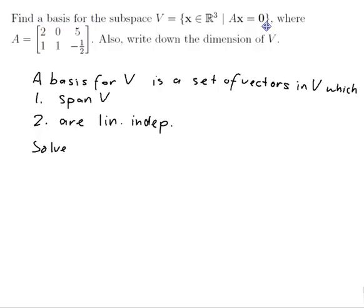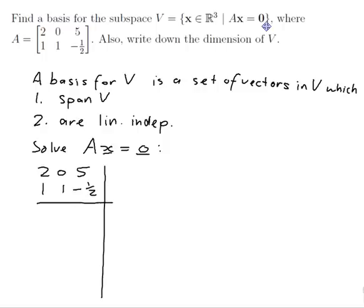So solve Ax equals 0. My matrix is 2 0 5, 1 1 minus a half. Now I want a column of the identity here which means I'd want a 1 here. I can get that by swapping those two rows, but actually there's already the second column of the identity here. So I think what I'll do is divide row 1 by 2 and that will get me a 1 where I want it without destroying the identity that I already have. So my new row 1 is a half of row 1. That will give me 1 0 5 over 2, 1 1 minus a half.